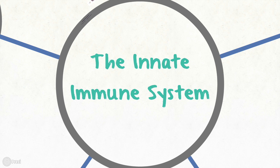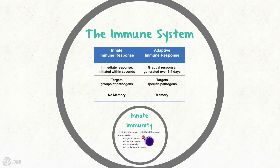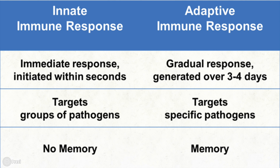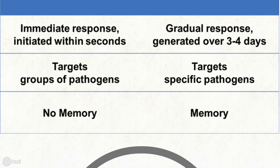The immune system is a complex biological system that protects our bodies from harmful diseases. Our immune systems are capable of recognizing and responding to hundreds of thousands of potential pathogens. The immune system can be divided into two parts: the innate or natural immune system, which is present at birth, and the adaptive or acquired immune system, which develops as the body is exposed to foreign substances over time. This video will discuss the components of the innate immune system and demonstrate how they can help protect our body against disease.